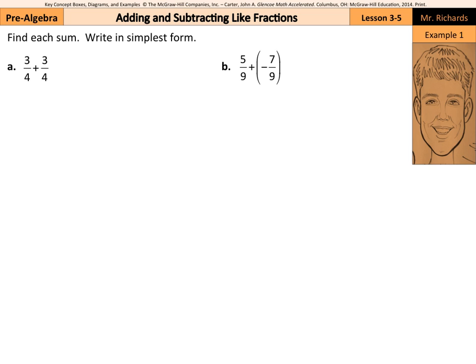Well, our first example has find each sum, write in simplest form. When we're adding fractions, we need common denominators, and these fractions today have common denominators. So if I have 3 fourths plus 3 fourths, what I'm going to do is add the numerators, the top numbers. 3 plus 3 is 6, and we'll keep the denominator 4.